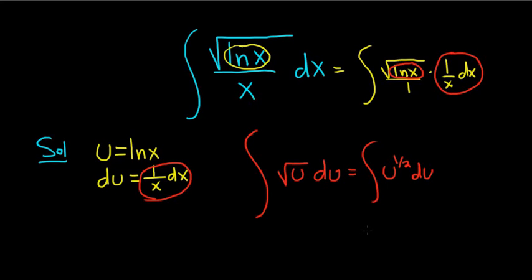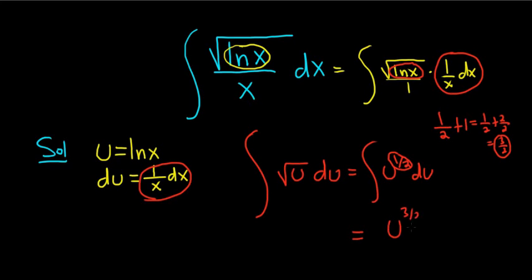Now we can use the power rule. Whenever you have u to a power, as long as that power is not negative 1, you can add 1. So you do 1/2 plus 1 — that's really 1/2 plus 2/2, which is 3/2. And then you divide by that number as well. So it's u to the 3/2 over 3/2, plus our constant c.